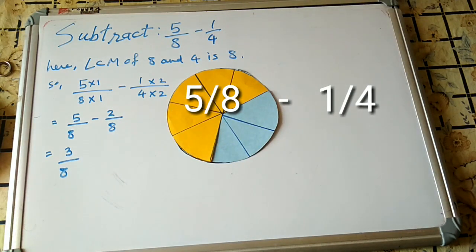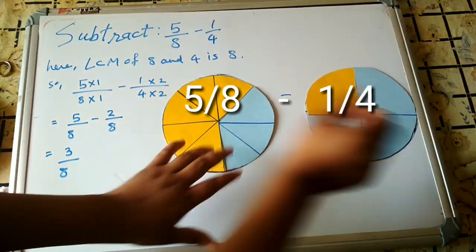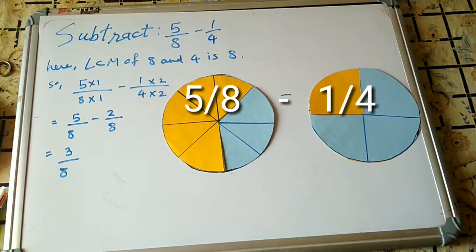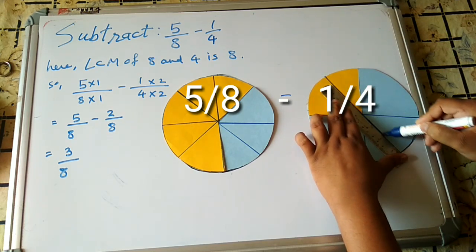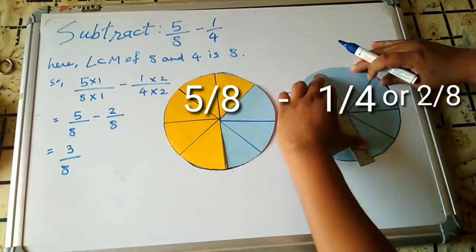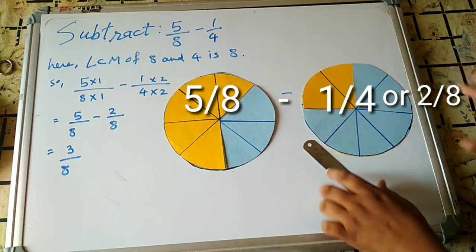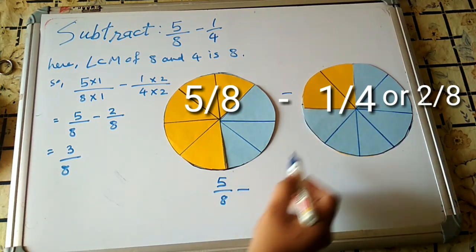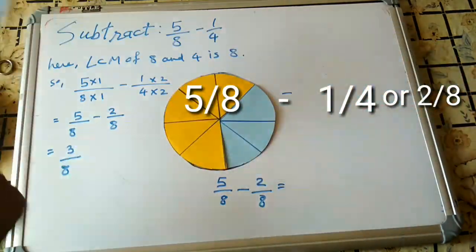In the activity, we can count 1, 2, 3, 4, 5 — so it is 5/8. We subtract 1/4, which is 1 out of 4 parts. Since it is an unlike fraction, we convert the 4 equal parts into 8 equal parts by drawing lines. Now it becomes 2/8. So 5/8 − 2/8 equals 3/8, as shown.